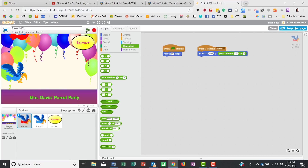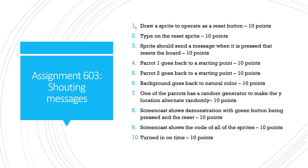For this assignment: draw a sprite to operate as a reset button, type on it, and have it send a message when pressed. Parrot one and parrot two should each go back to a starting point. The background color should return to normal by clearing effects. One parrot should use a random generator for its y location. Your screencast should show the green flag pressed, the parrots flying, colors changing, then the reset pressed a couple of times. Finally, show the code for all sprites.